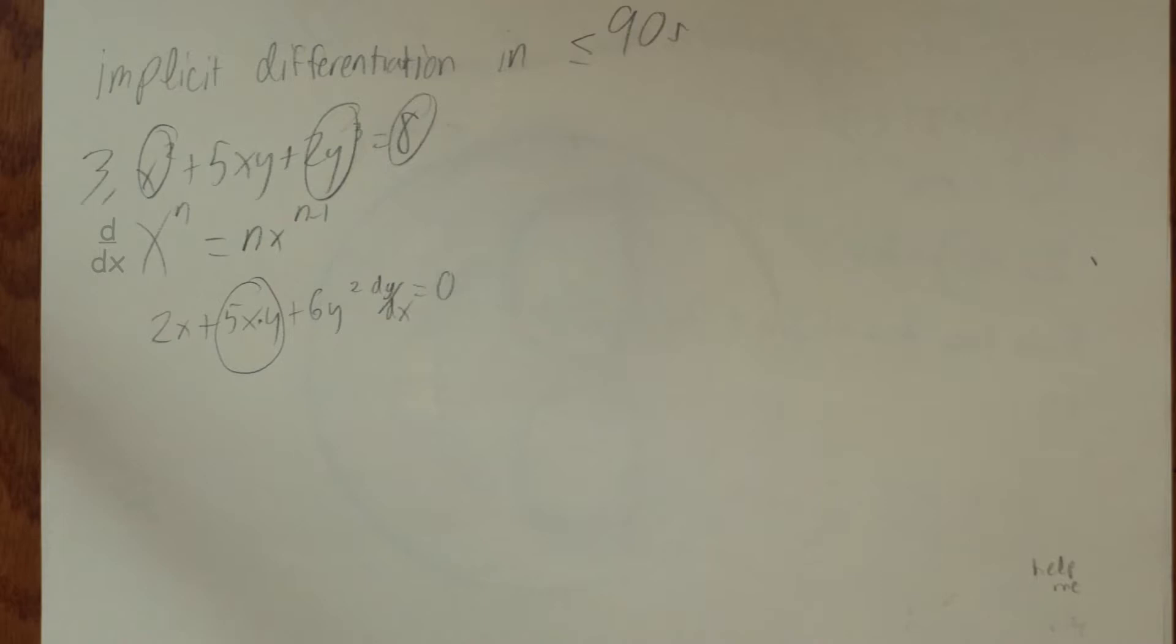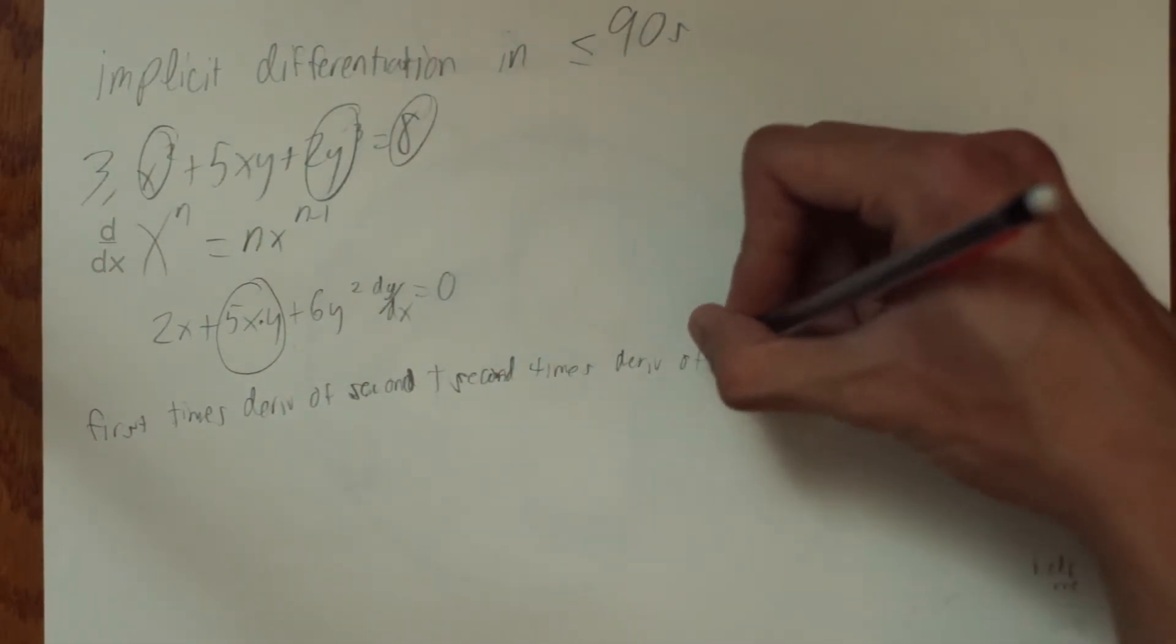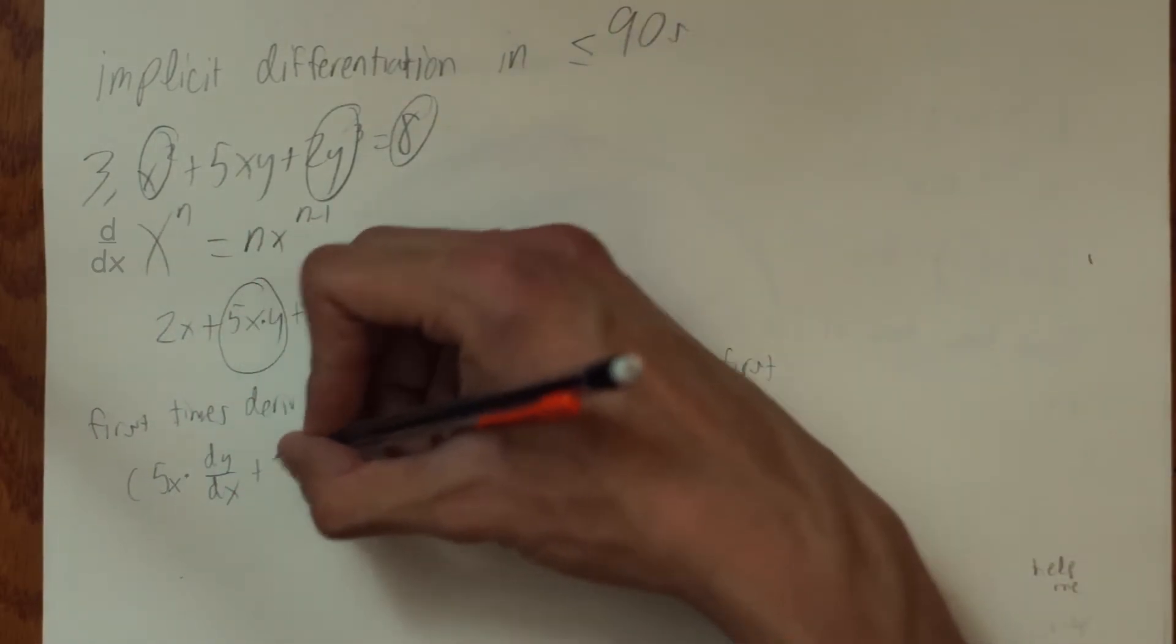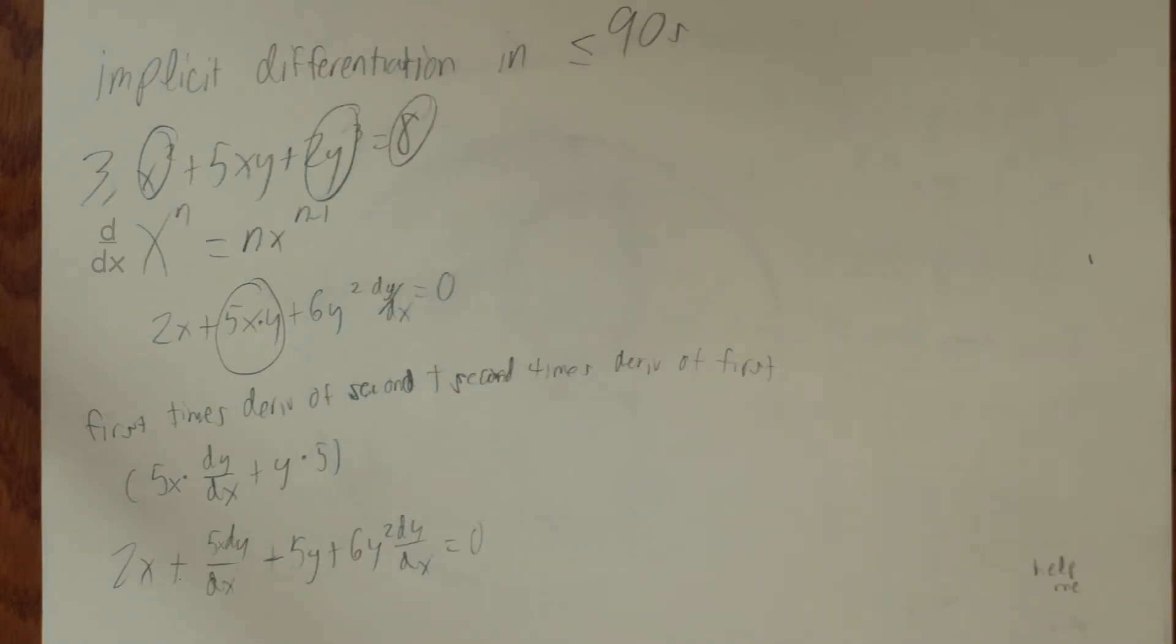Which states that d over dx equals first times derivative of the second plus second times derivative of the first. So, 5x times dy over dx plus y times 5 turns into 5x dy over dx plus 5y.